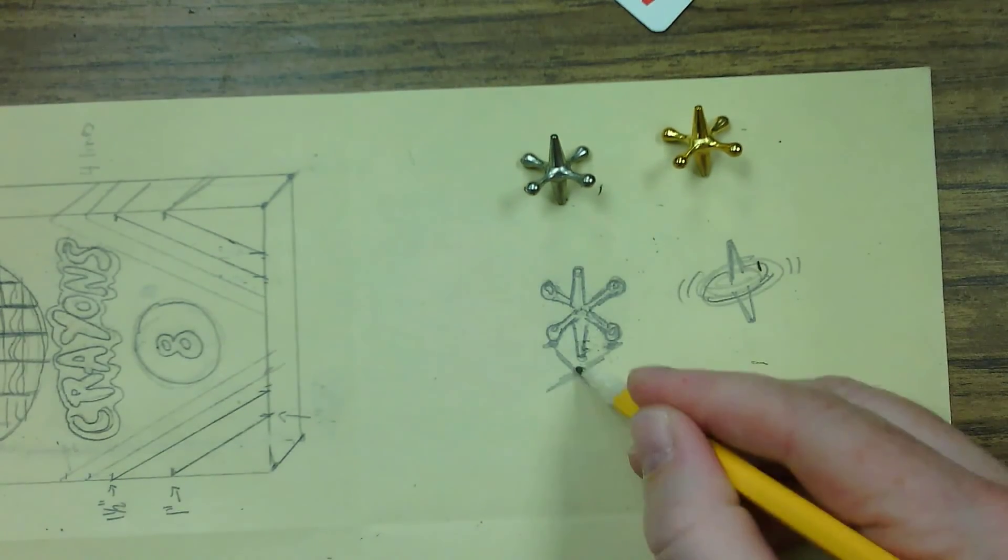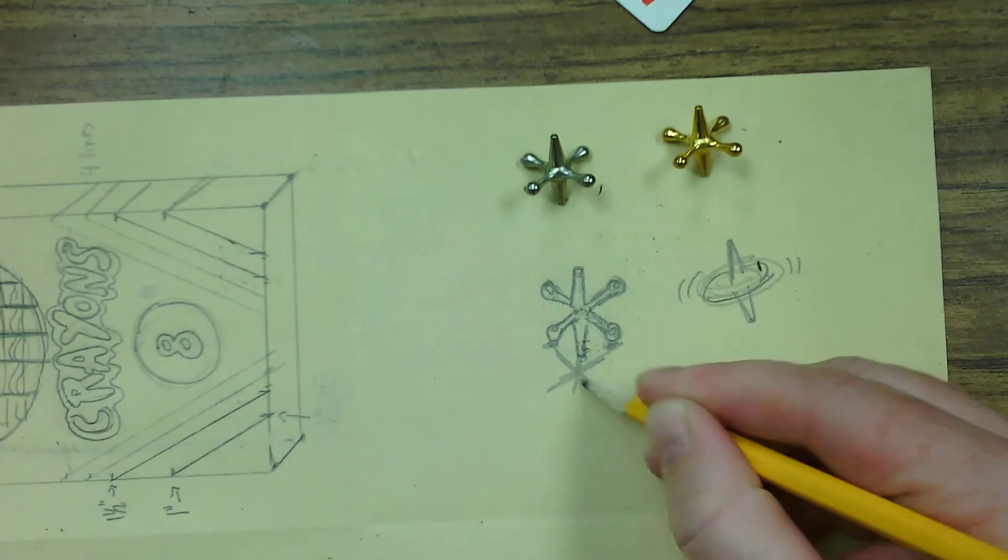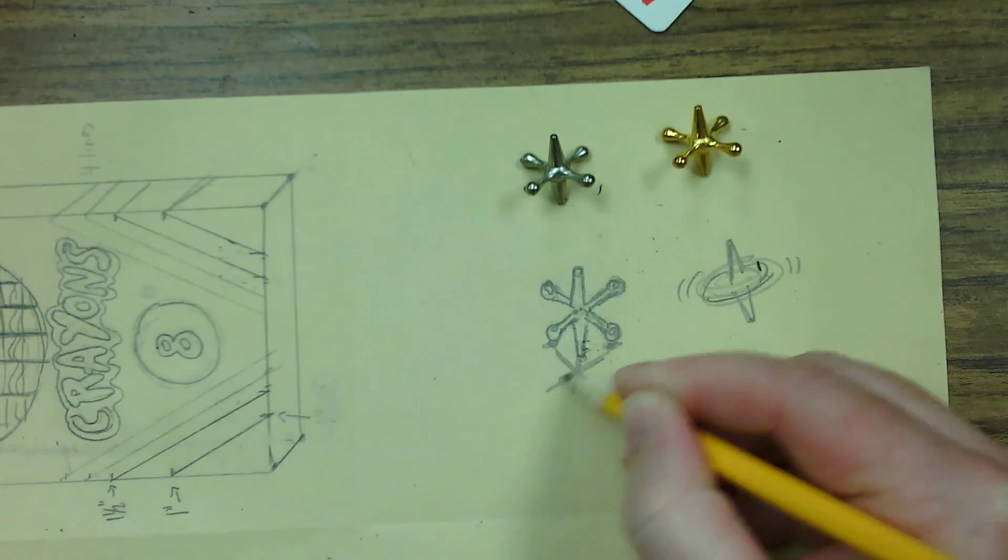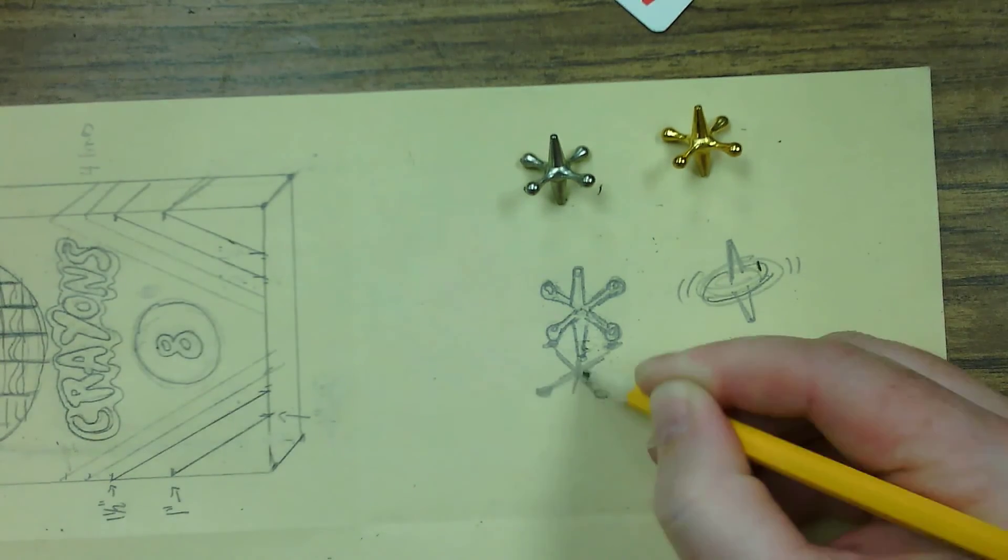Next, the shadow. The shadow kind of mimics the shape of the jack, but it's distorted just a little bit.